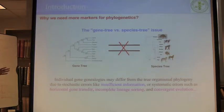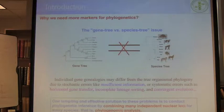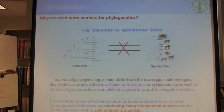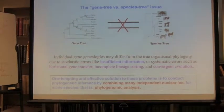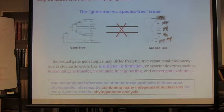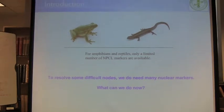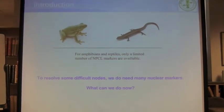So gene trees and species trees are different in many cases. When we use a piece of DNA to infer a species tree, the efficient way to resolve this problem is to analyze many independent nuclear loci to see what the final answer is. That is phylogenomic analysis — you use many, many of these kinds of markers.